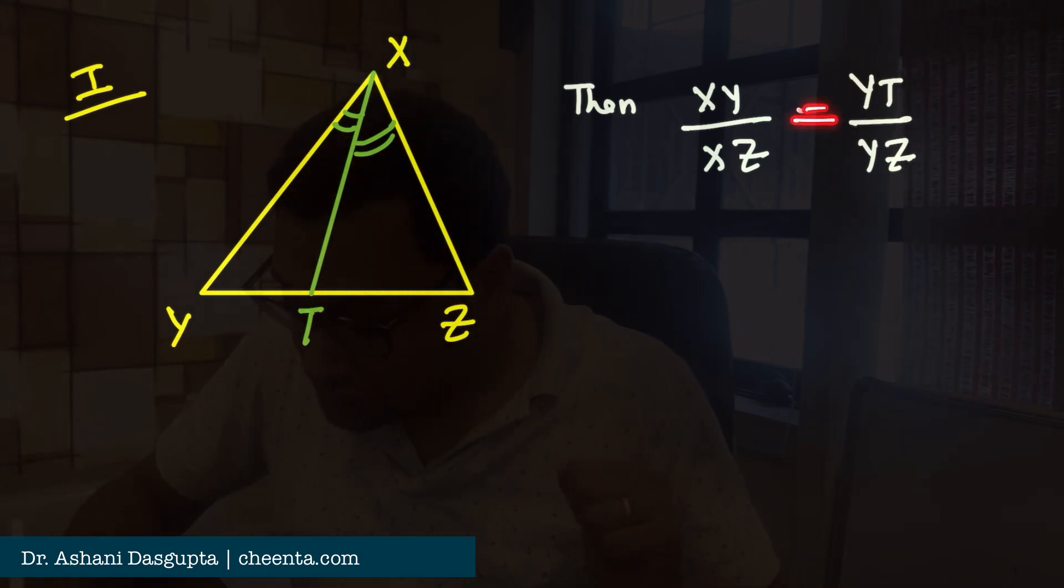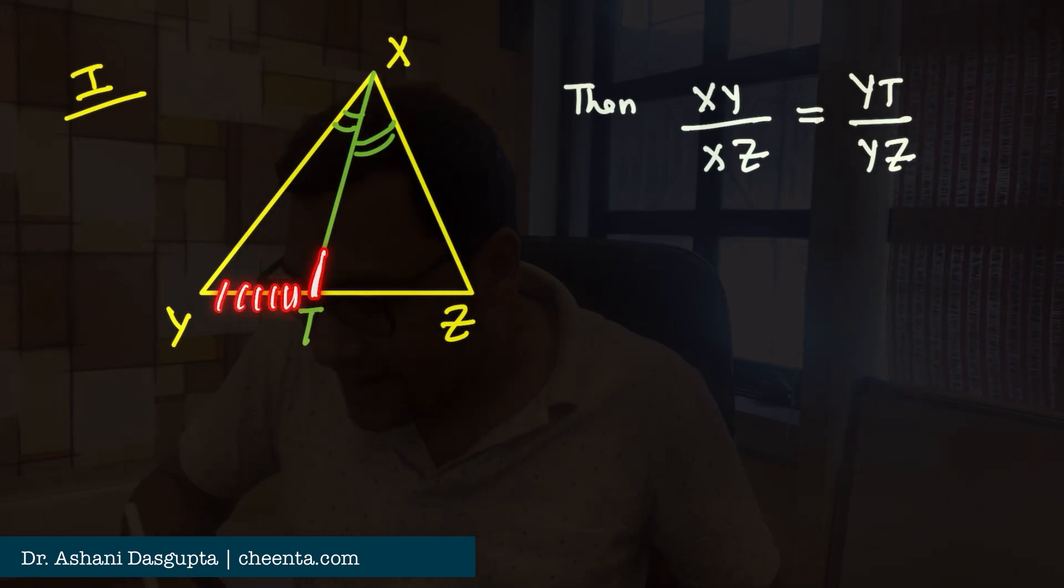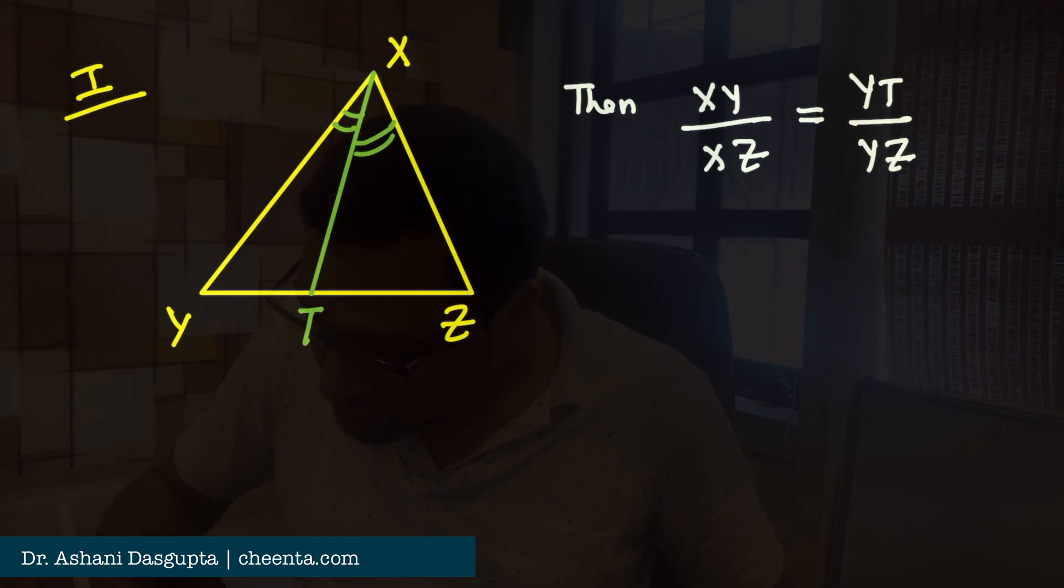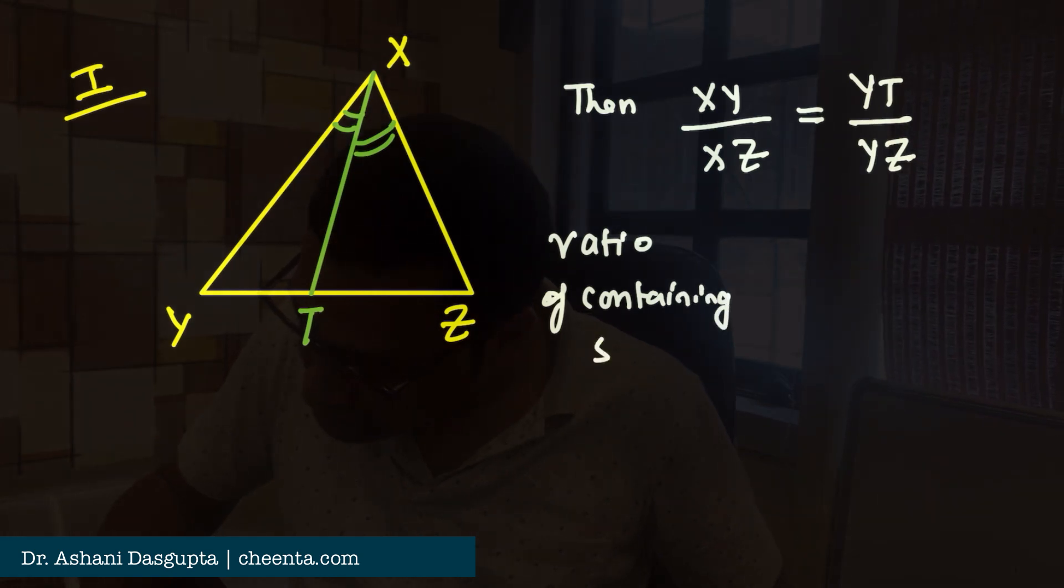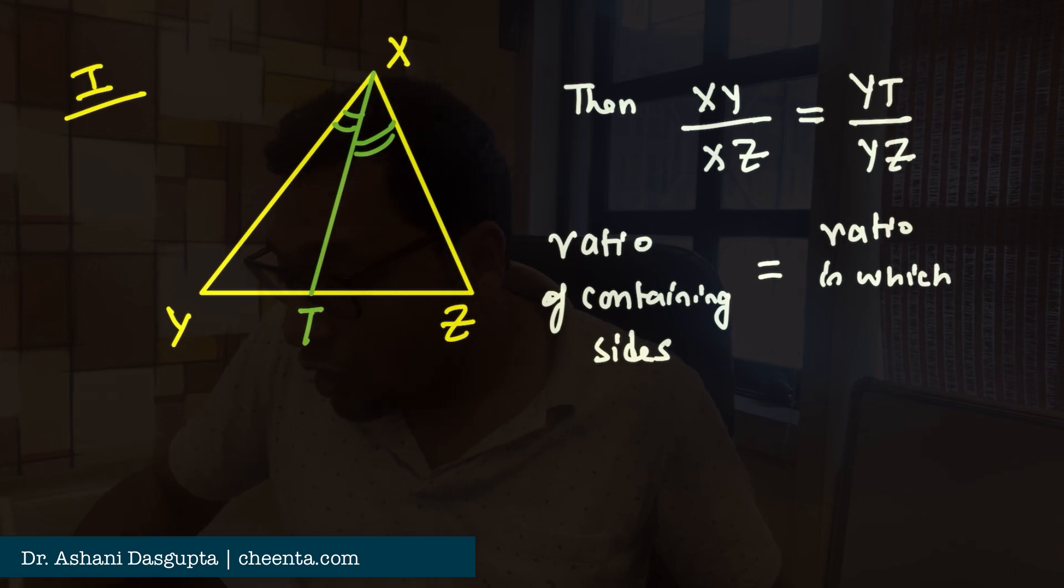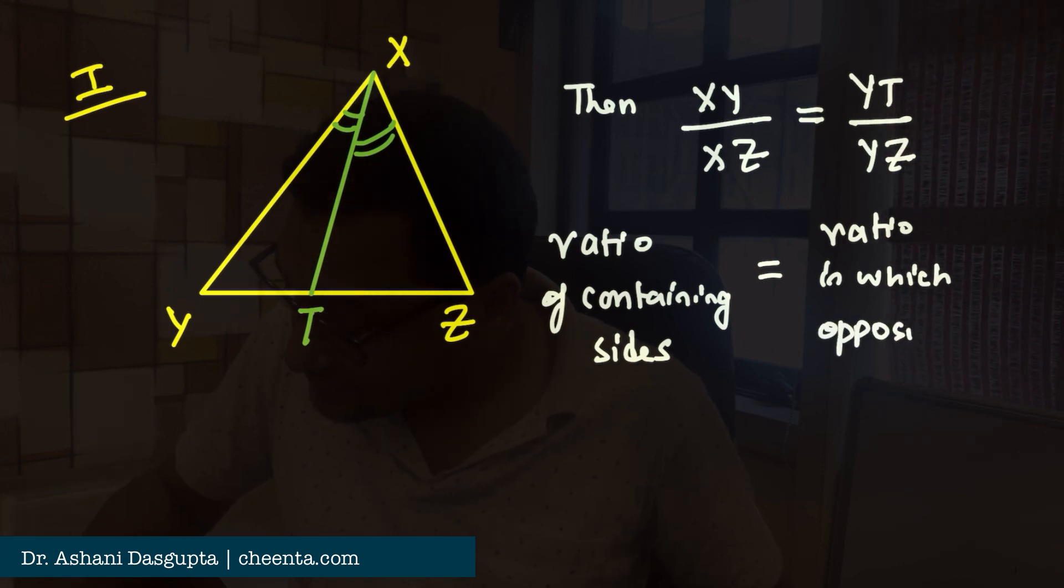That is equal to the ratio in which the opposite side is divided. So, ratio of containing sides is equal to ratio in which opposite side is divided.